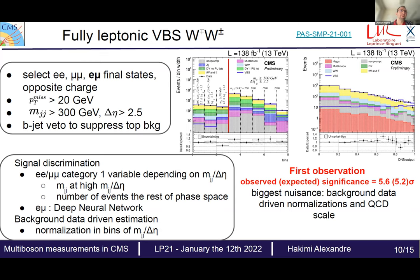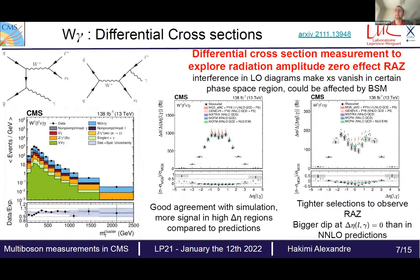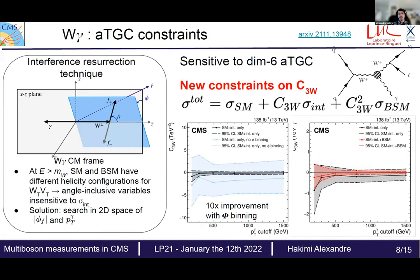On the radiation amplitude zero analysis: without the tighter selection you see the standard plot; with tighter cuts you have cleaner access to the dip region. However, this was not the main focus of the paper — the interference resurrection technique with the 2D phi variable is what actually drives the sensitivity for the extracted BSM limits on c3W.